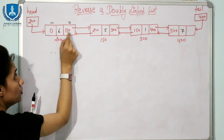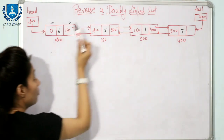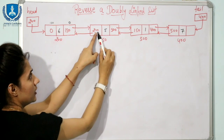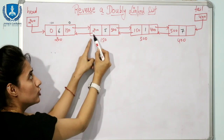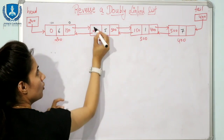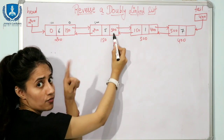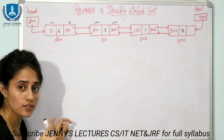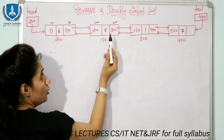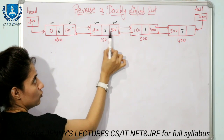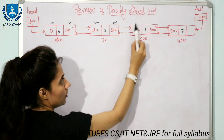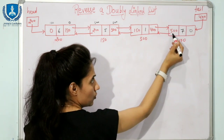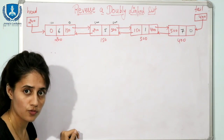This is what reversing means: swap these values. Finally, swap head and tail — tail would point here and head would point here. For example, the previous pointer of this node contains the address of the previous node, but after reversing I want the previous pointer to contain the address of the next node — 500 — and the next pointer should contain the address of the previous node — 200. We are essentially swapping these values: 200, 500, 0, 150 — all of these.